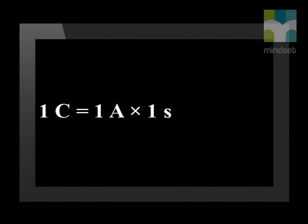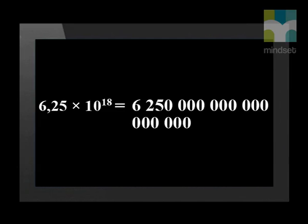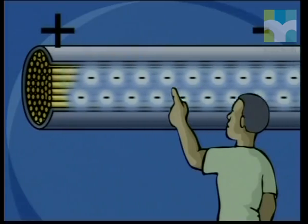Notice that unit symbols are always written with a number value and are different to the symbols that define quantities. A coulomb is the amount of charge carried by 6.25 times 10 to the 18 electrons. 6.25 times 10 to the 18 is scientific notation for 6.25 million million million electrons. That is a lot of electrons moving past a given point in one second.